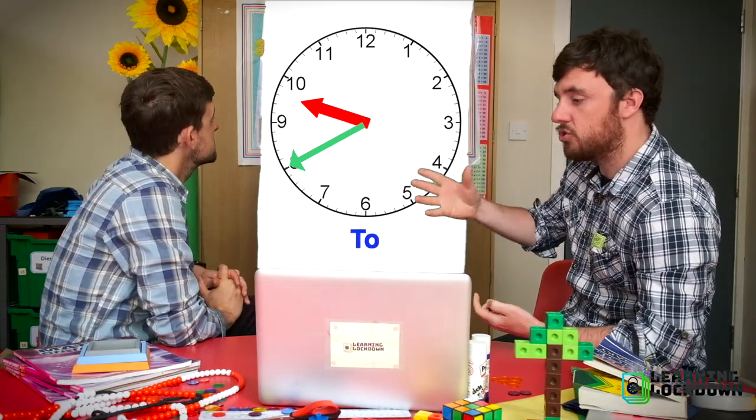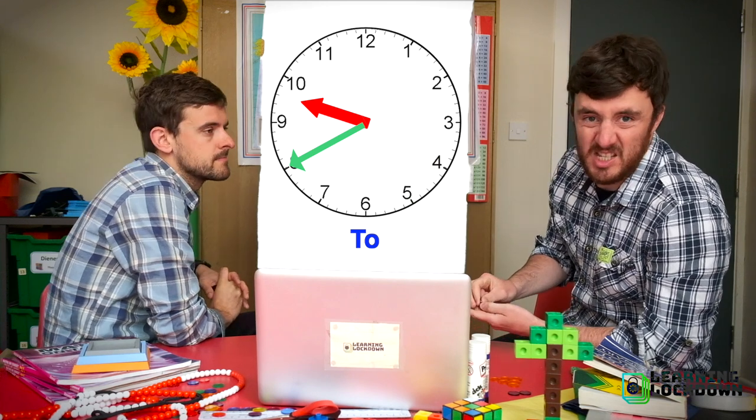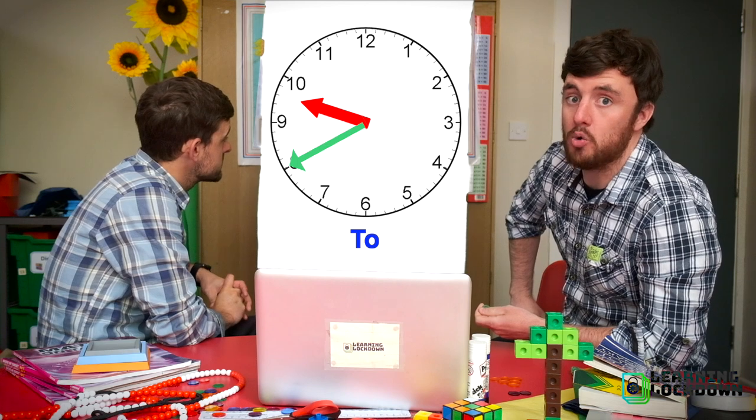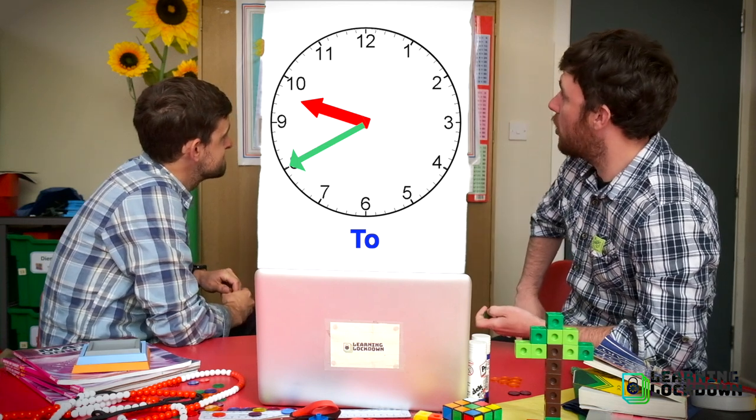The next easiest bit to work out is the hour. So let's see which hour is our hour hand going to go to next. It's on the to side and it's going to go to ten. So it's something to ten.